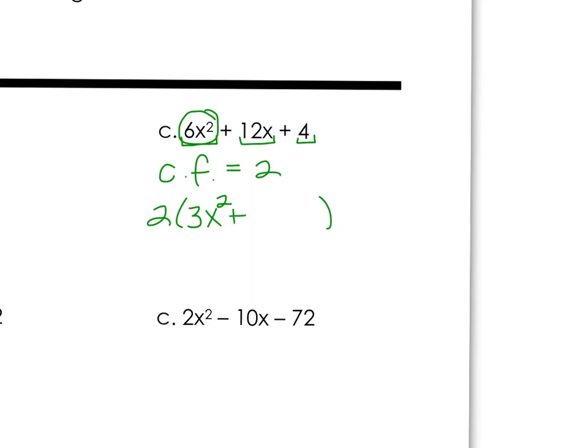2 goes into 12x, well 2 goes into 12 six times, including that x, and then plus again, and 2 goes into 4 twice. So our common factor was 2, and that could separate this into a product of 2(3x² + 6x + 2).